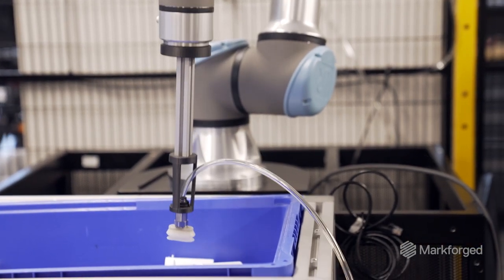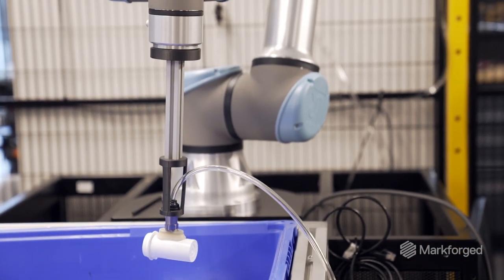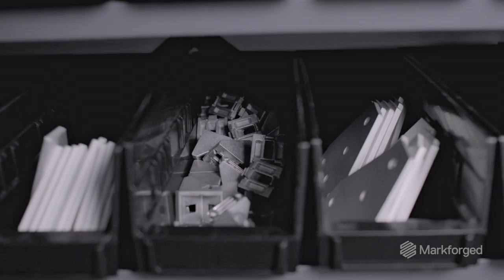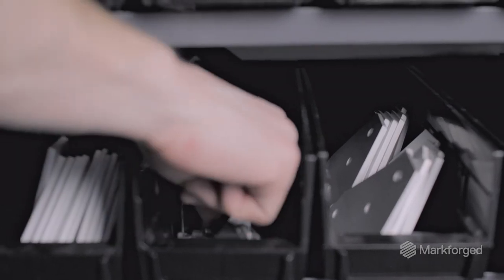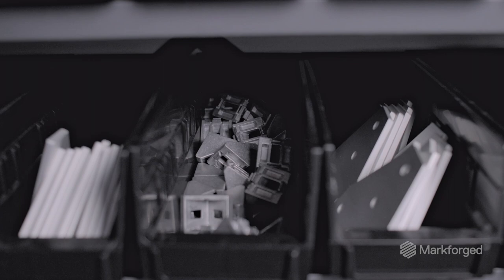End-of-arm tooling and part manipulation is one of the most complex parts of programming a robot. You can buy grippers off the shelf—pinch grippers, suction grippers—and they range from $3,500 up to $50,000 or $60,000 depending on the complexity of the gripper.